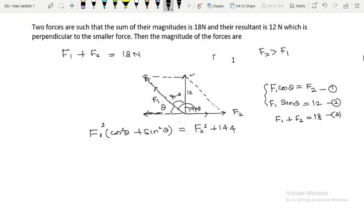Ye bhi square aega, yani ki F1 minus F2 into F1 plus F2 is equal to 144. Me surprise ko idha leke a square minus b square ka formula laga diya. F1 plus F2 mujhe pata 18.